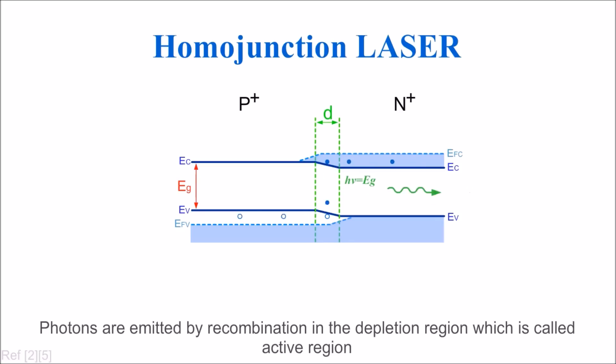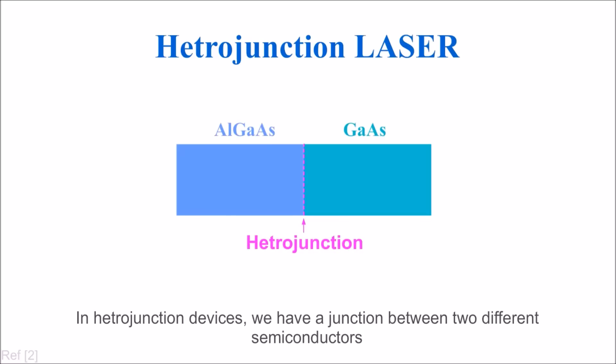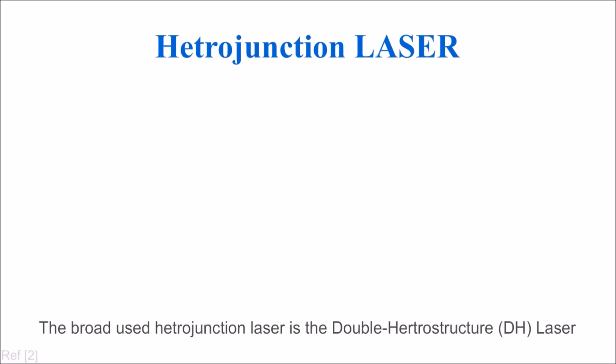Photons are emitted by recombination in the depletion region, which is called the active region. Another popular type of laser is heterojunction. In heterojunction devices, we have a junction between two different semiconductors.